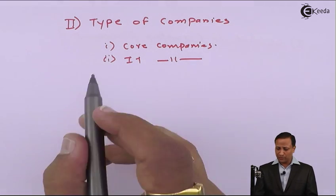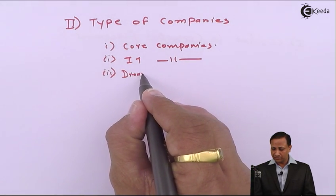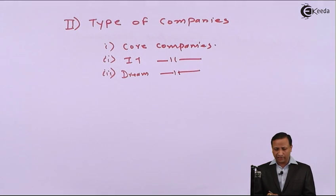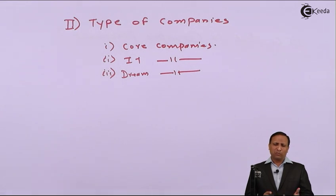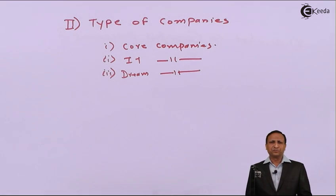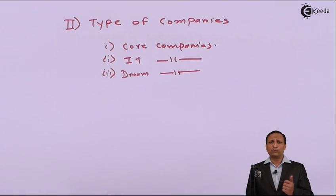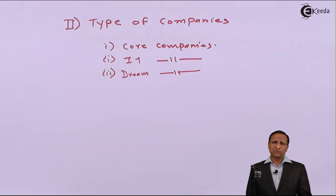The third type of categorization given by colleges is dream companies. A dream company is a status given by the college to a particular company. It is not related to any specific branch. Most of these companies want to visit the college on Day 1, meaning they get a good pool of students. In return, they assure the college that they will recruit students in bulk.